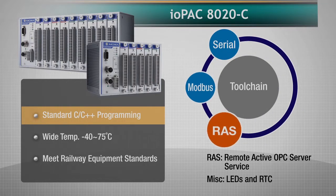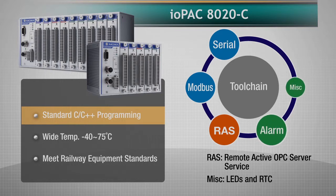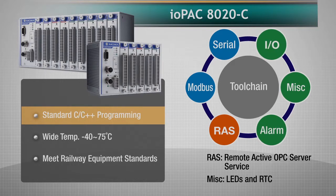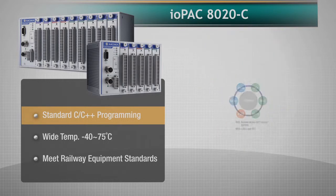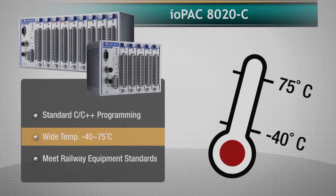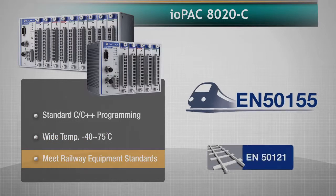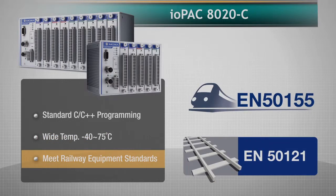These devices are built with a programmable C, C++ architecture, supplemented by MOSAR's easy-to-use APIs. They are ruggedly designed and will work in a variety of harsh environments, in temperatures ranging from negative 40 degrees to 75 degrees Celsius. They are also compliant with EN 50155 and EN 50121-3 and 4 for railroad applications.